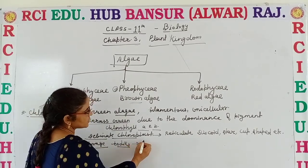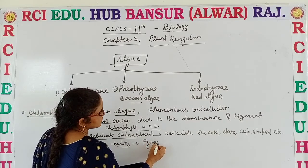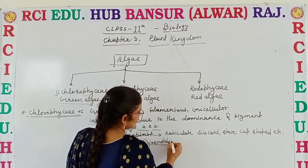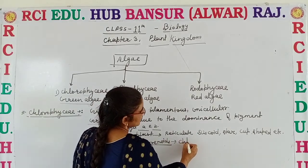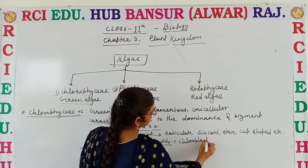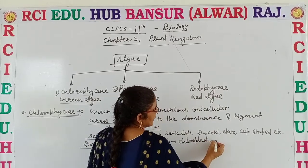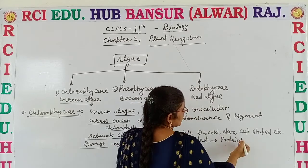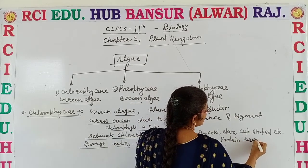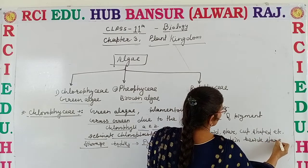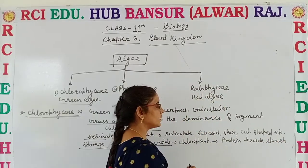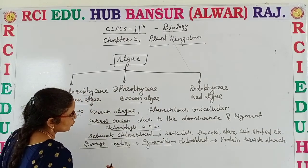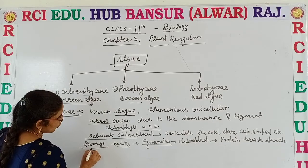These algae have storage bodies which are known as pyrenoids. These pyrenoids are also present inside the chloroplast. They contain protein, and beside that they are having starch. So these are the pyrenoids, also known as the storage bodies.